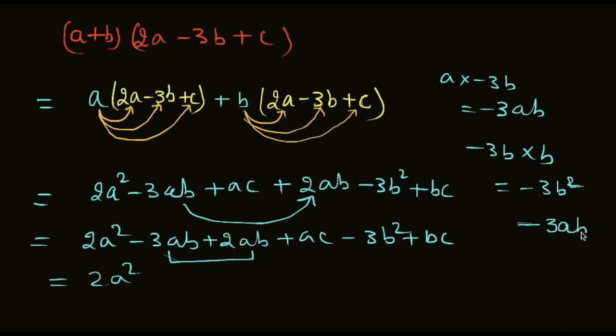Minus 3ab and plus 2ab, we'll have a minus sign because opposite signs, so we subtract: 3 minus 2 is 1, and we don't need to write 1, so it's minus ab plus ac plus bc minus 3b squared.